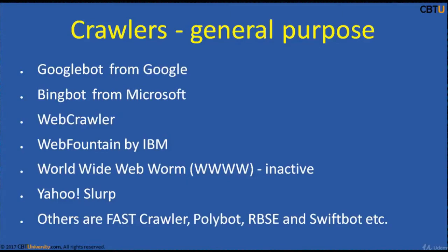Web Fountain is an internet analytical engine implemented by IBM for the study of unstructured data on the World Wide Web. World Wide Web Worm (www.www) is currently inactive; it was a crawler used to build a simple index of document titles and URLs.